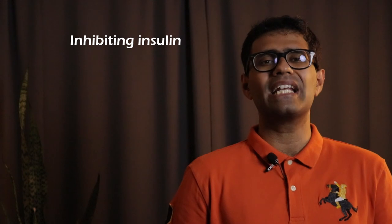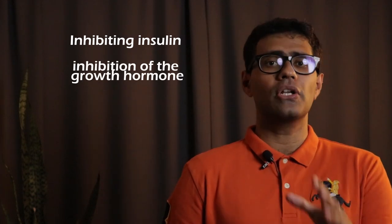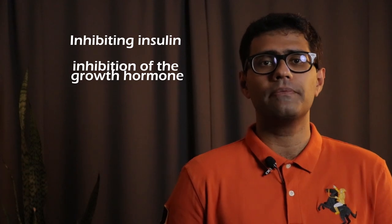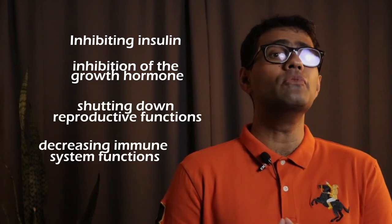Cortisol turns off all bodily functions that are not required while dealing with a stressor. These include, but not limited to, inhibiting insulin causing an increase in energy due to the blood glucose levels, inhibition of the production of the growth hormone, shutting down the reproductive functions and decreasing immune system functions. Take good note of this point.